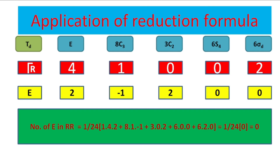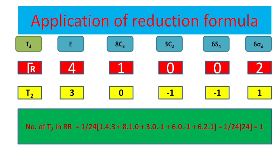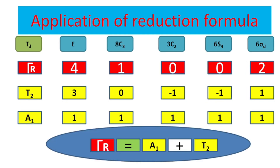For T1: 1 upon 24 into (1 into 4 into 3) plus (8 into 1 into 0) plus (3 into 0 into minus 1) plus (6 into 0 into 1) plus (6 into 2 into minus 1) — summation is 0, so T1 does not occur. For T2: 1 upon 24 into (1 into 4 into 3) plus (8 into 1 into 0) plus (3 into 0 into minus 1) plus (6 into 0 into minus 1) plus (6 into 2 into 1) — summation is 24, so T2 occurs once. Conclusion: the reducible representation for methane is made up of A1 and T2, which tells us the symmetry of group orbitals and hybridization.